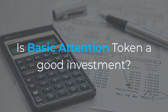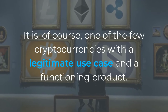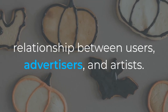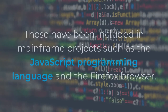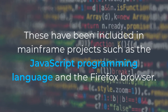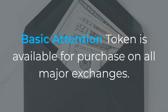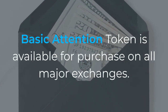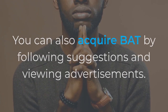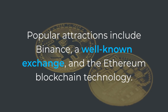Is Basic Attention Token a good investment? It is, of course, one of the few cryptocurrencies with a legitimate use case and a functioning product. BAT has the potential to completely revolutionize the relationship between users, advertisers, and artists. These have been included in mainframe projects such as the JavaScript programming language and the Firefox browser. Basic Attention Token is available for purchase on all major exchanges. Popular options include Binance, a well-known exchange, and the Ethereum blockchain technology. You can also buy BAT on Bitpanda if you live in Europe.